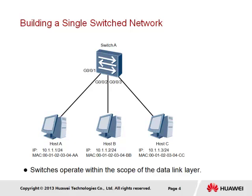We start by considering three hosts — hosts A, B, and C — each of which have an IP address that is part of the same 10.1.1.0/24 network, as well as a unique MAC address for the interface connecting to the switch. As a layer 2 device, the switch is only concerned with the MAC addresses of the hosts, whilst the IP address is only relevant to the end stations in this instance.